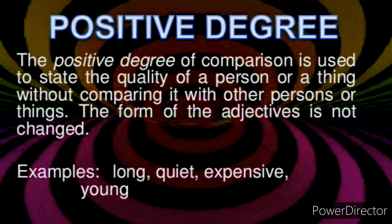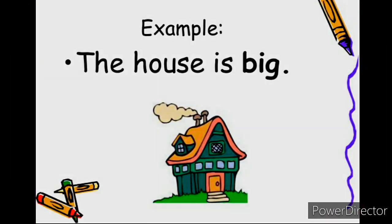Positive degree: the positive degree of comparison is used to state the quality of a person or a thing without comparing it with other persons or things. So positive degree is used only to describe a person or thing. For example, the house is big — here big is the positive degree.